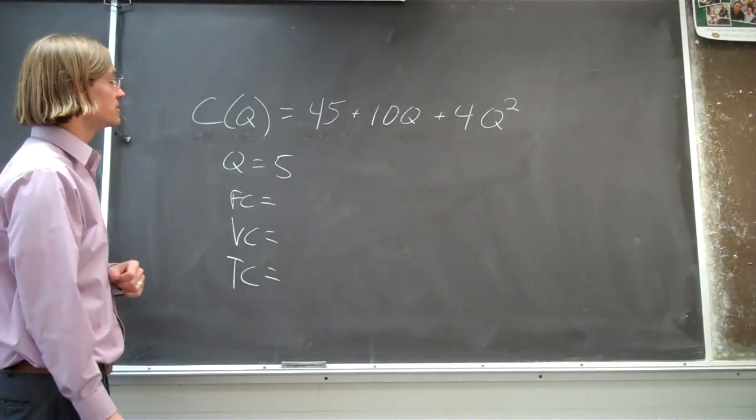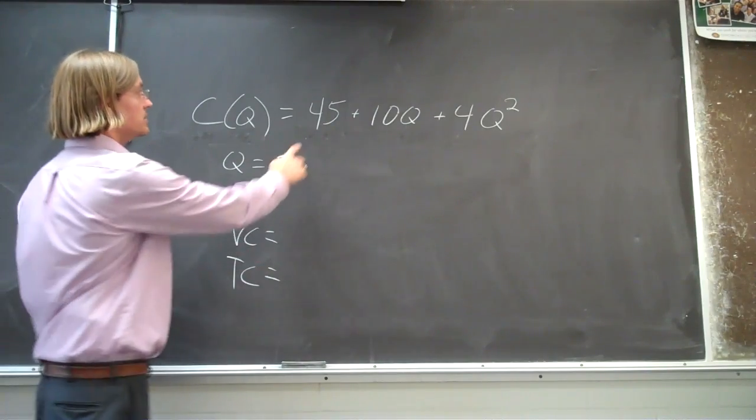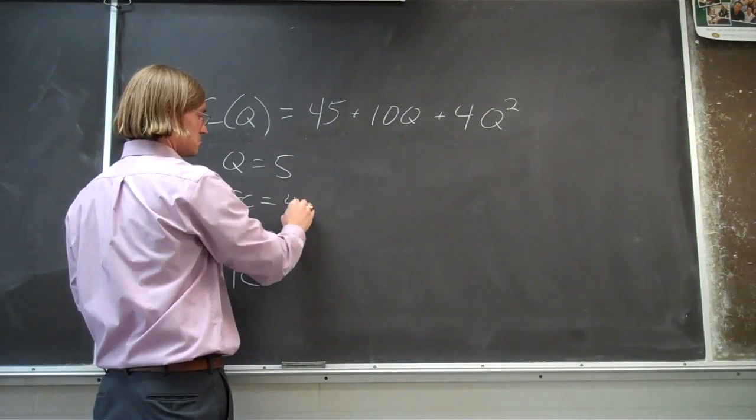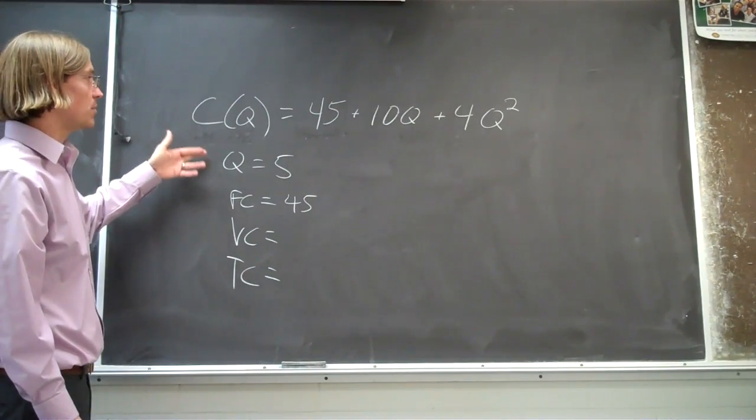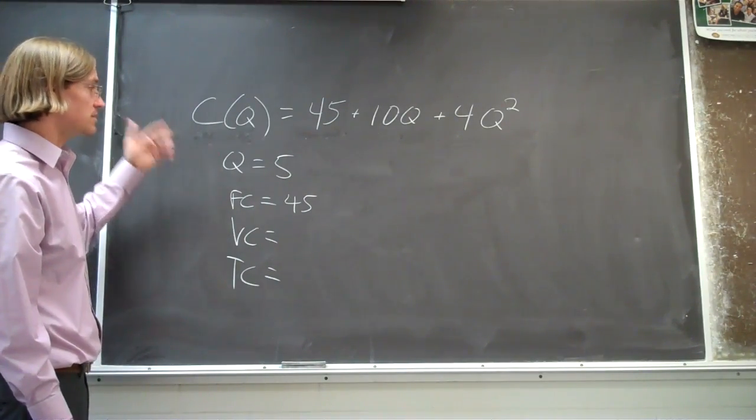And so the fixed cost is going to be just the fixed component, it'll be 45. It doesn't matter if you were to change Q, change your output, increase it, decrease it, it doesn't matter. That fixed component is always going to be 45.